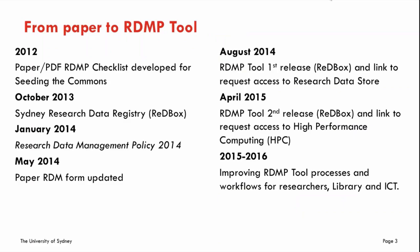Throughout the policy process, the feedback was that for researchers you want to avoid duplicating input. It was really hoped that if we're having an RDMP tool, there could be integration with other systems, like Curtin. What we have done is integrate that with the request for storage. We did have a paper or PDF RDMP checklist developed for the ANN Seeding the Commons project, and we updated that form in May 2014. But with the policy having come in and having the Conservatorium and Faculty of Engineering and IT as early adopters, we really needed an online tool across the whole university. There were discussions about integrating with the ethics approval process, but not necessarily all research requires ethics approval, so we went with the integrate-with-storage option.